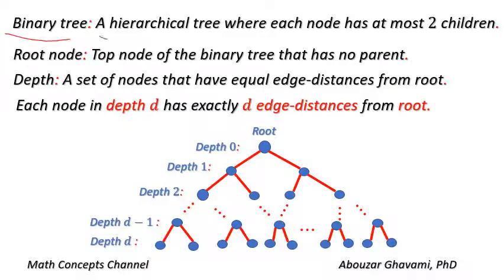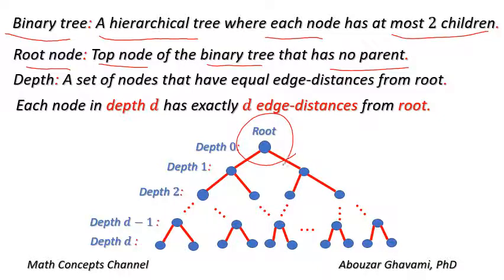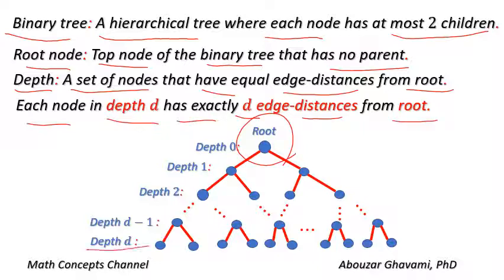A binary tree is a hierarchical tree where each node has at most two children. The root node is the top node of the binary tree that has no parent. A depth is a set of nodes that have equal edge distances from the root. Each node in depth D has exactly D edge distances from the root. For example, the root node is at depth zero, and each node at depth one has exactly one edge distance from the root.